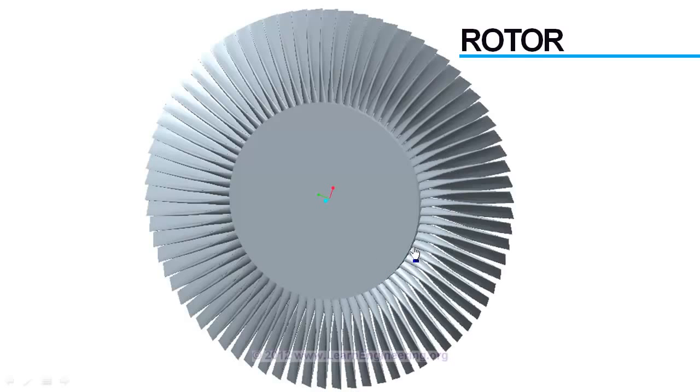Here it is. This is one rotor set, and you can see there are series of blades which are connected to hub of the rotor. And in different orientations it will look like this.